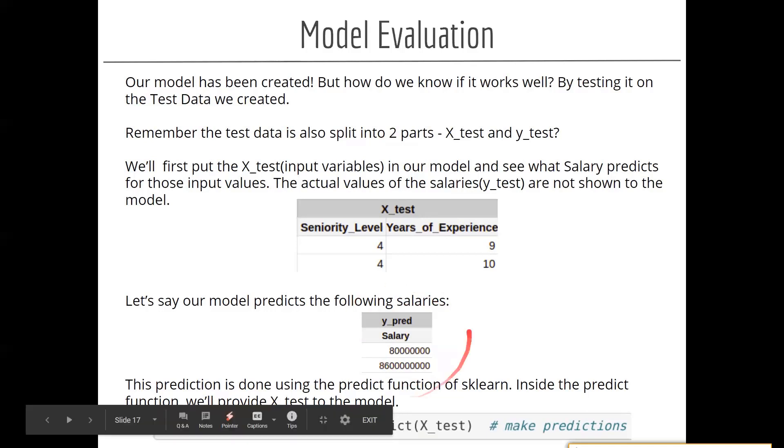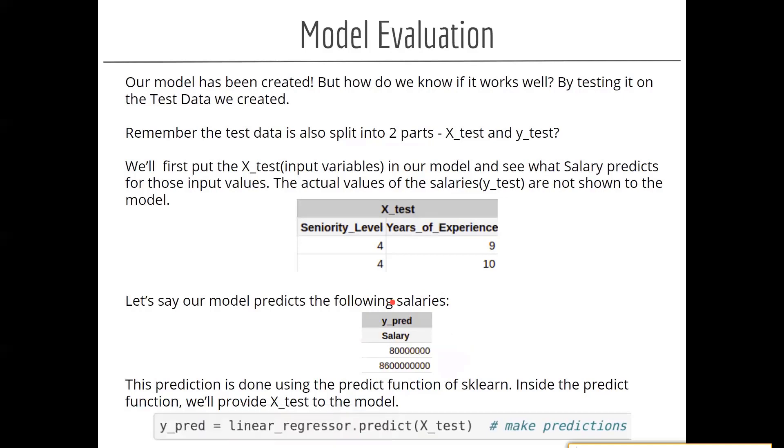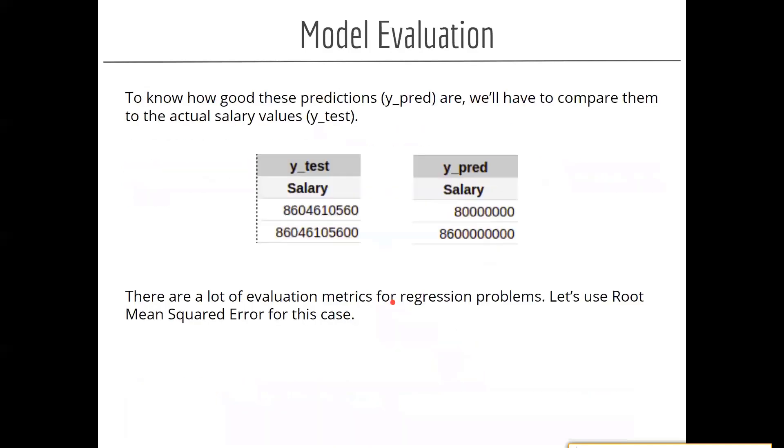However, the actual values of those particular entries are this - y_test - which we already know because we have hidden it. Independently we have maintained some sanity and we said okay, we are not gonna showcase this test dataset to our model.